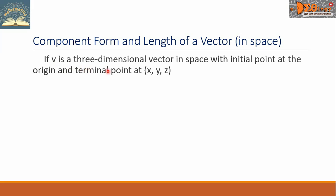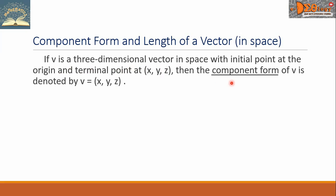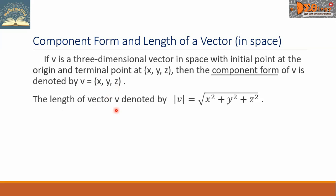If V is a three-dimensional vector in space with initial point at the origin and terminal point at (X, Y, Z), then the component form of V is denoted by V equals (X, Y, Z). The length of vector V, denoted by this symbol, equals the square root of the quantity X squared plus Y squared plus Z squared.